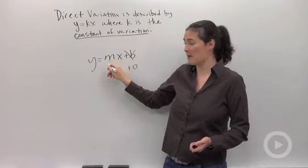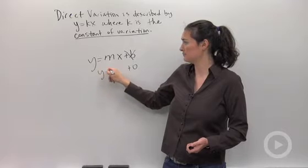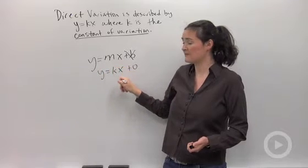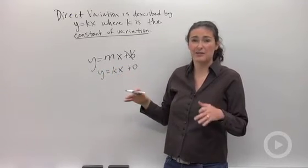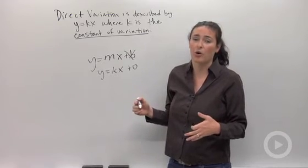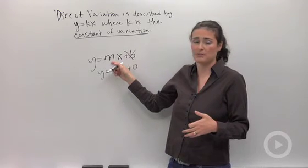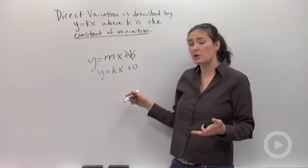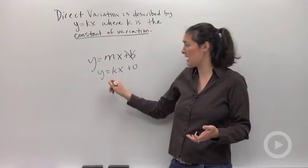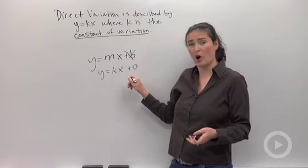And instead of the letter m, I'm using the letter k. Direct variation is just a slightly different version of what you guys already know about y equals mx plus b equations. So when you're doing these kinds of problems, keep in mind that your y-intercept is always going to be 0.